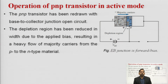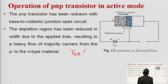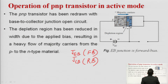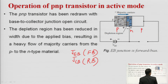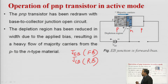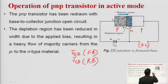We will now see the operation of a PNP transistor in active mode. In the active region, the emitter-base junction must be forward biased and the collector-base junction must be reverse biased. Considering one voltage at a time — with the collector-base junction open circuit — we observe the emitter-base junction: the P-type is connected to the positive of the battery and the N-type to the negative, so the emitter-base junction is forward biased.